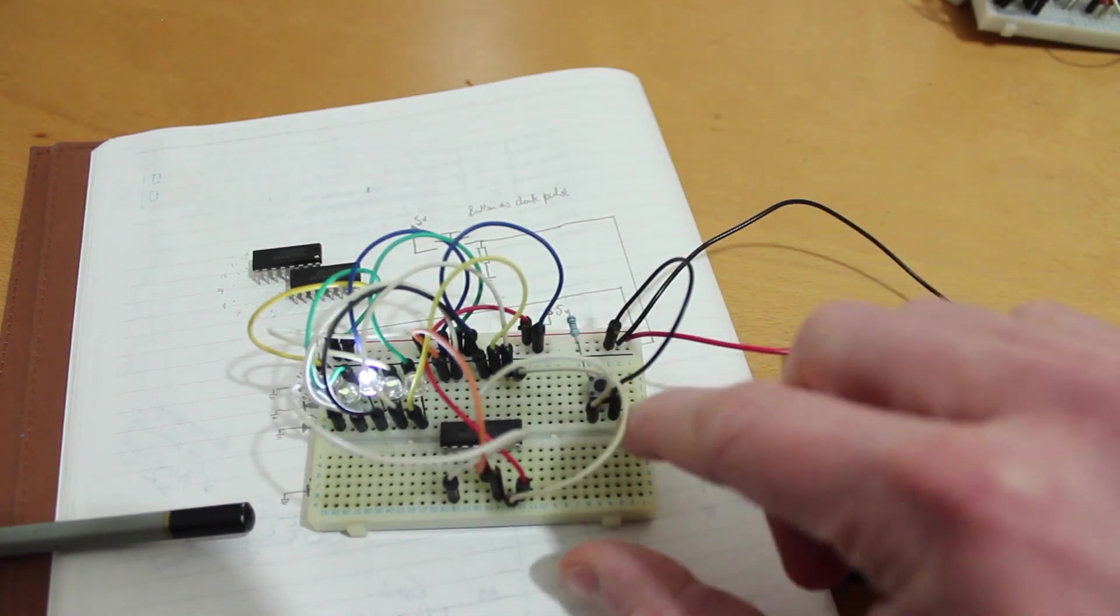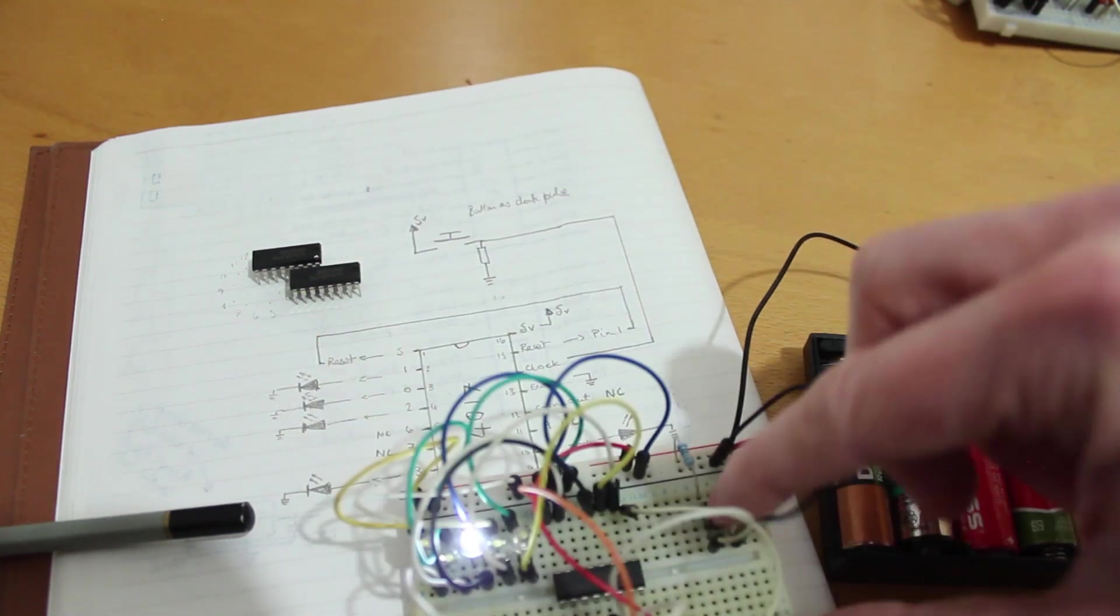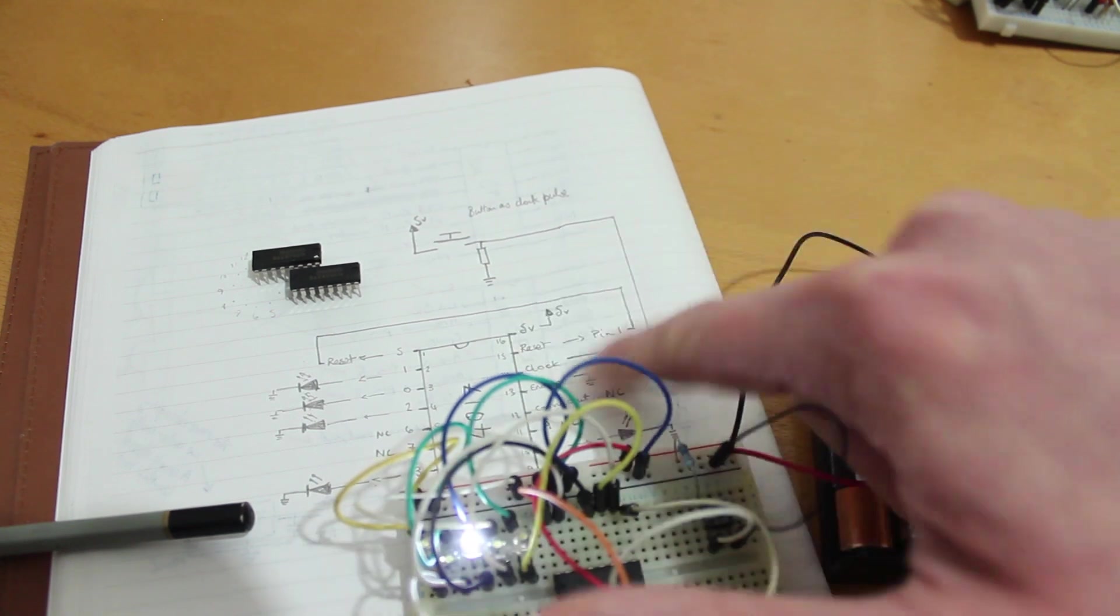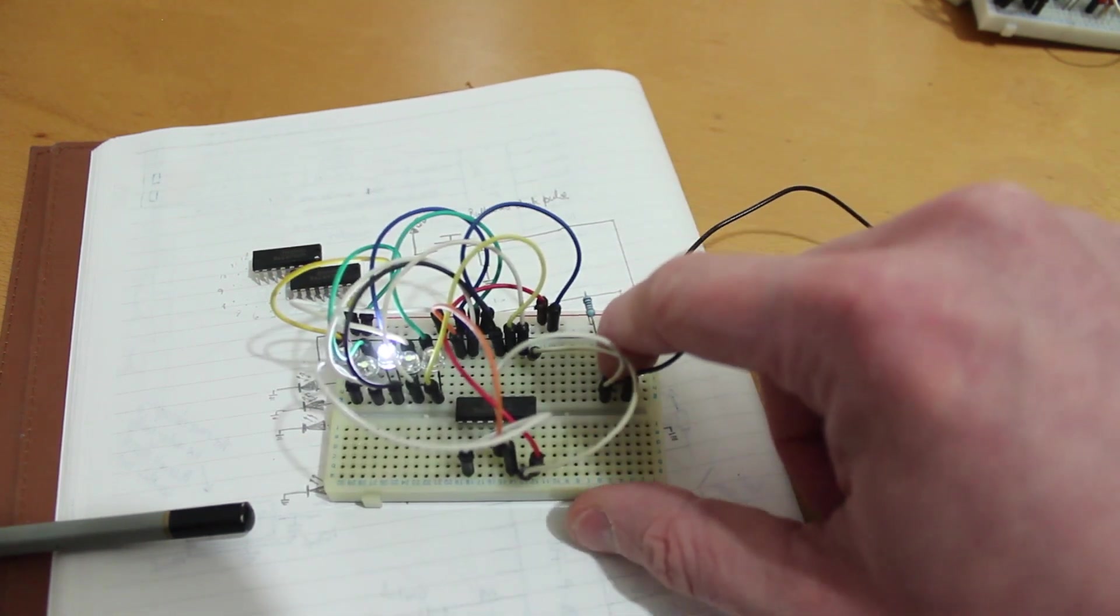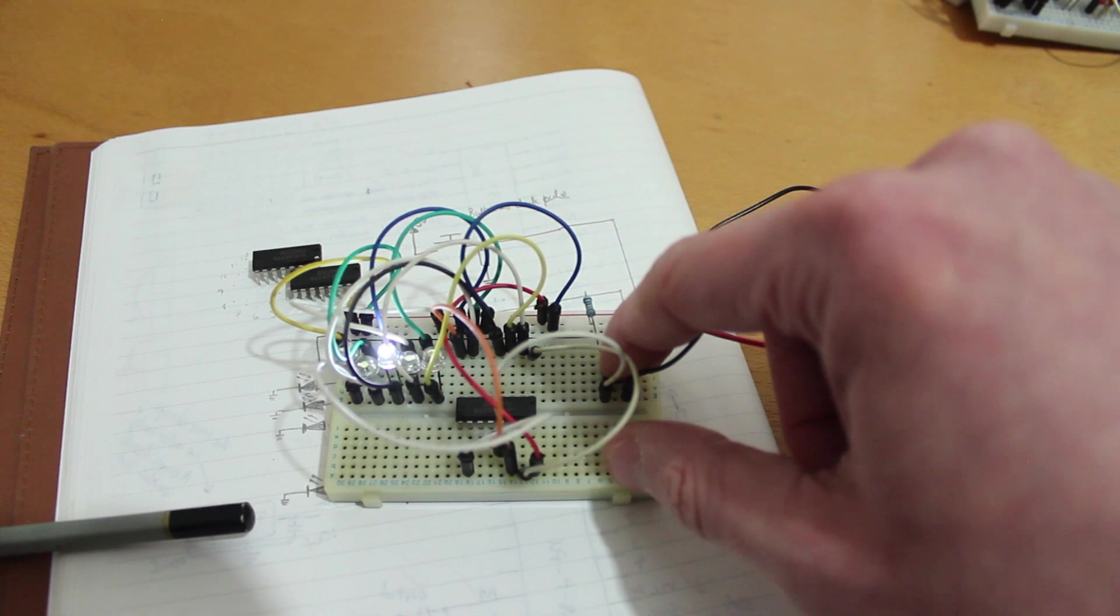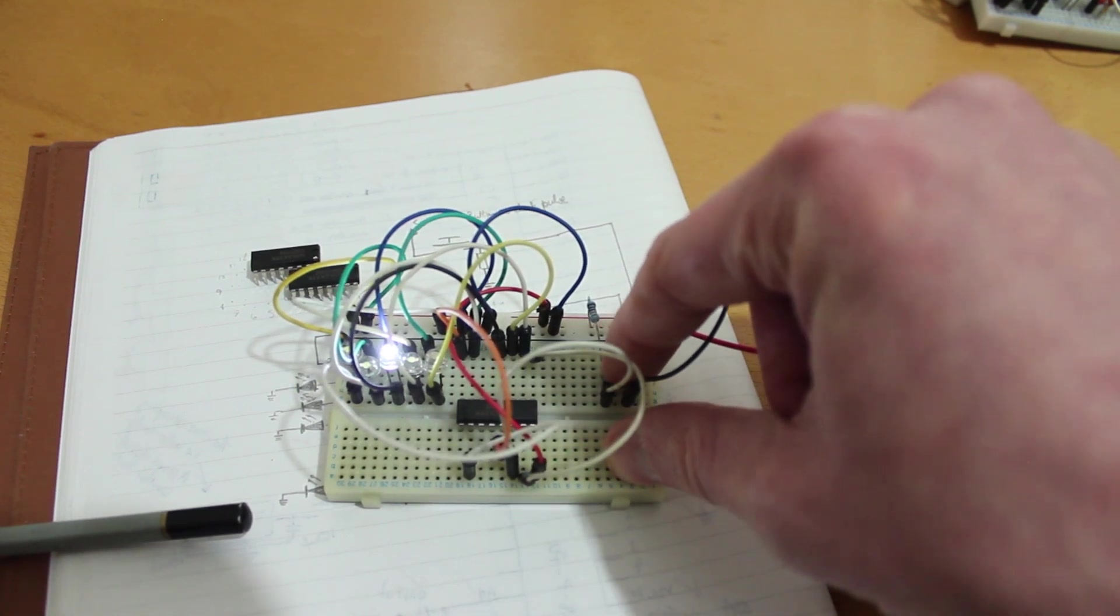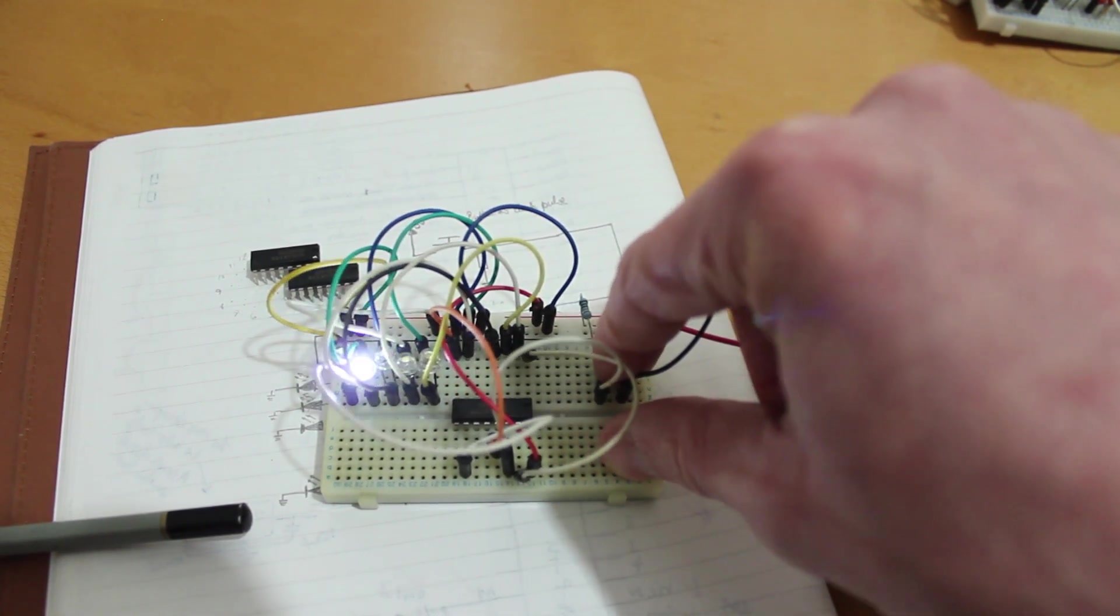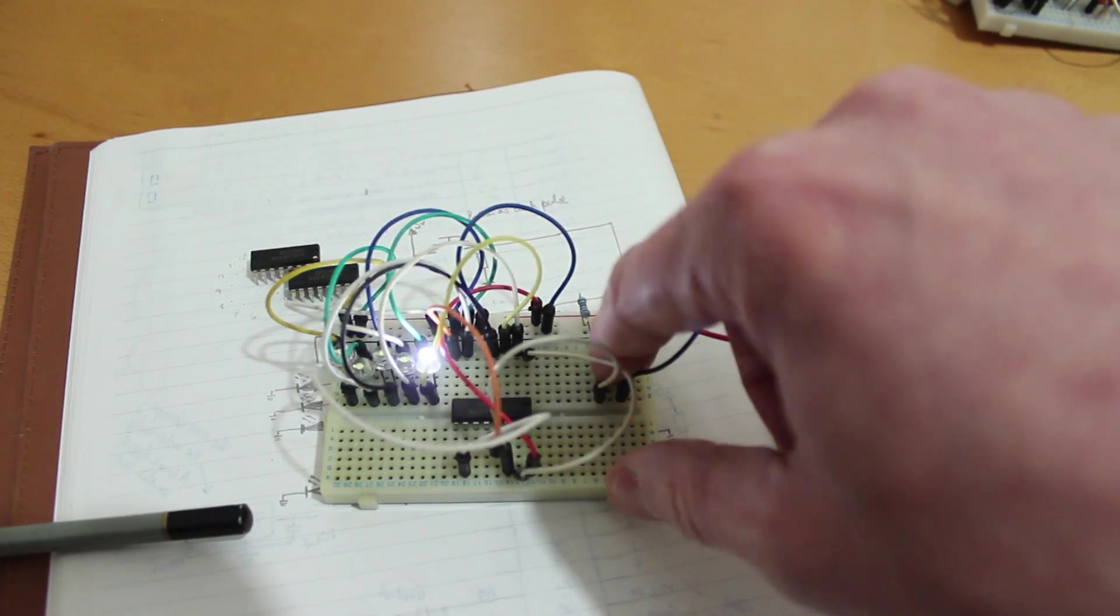I've just got a button attached here, going into the clock so that I can manually move these counts along. Now, there's not really any decoupling on here and it's not a debounce button, so it will look a bit weird. But that's what happens when you pulse that clock.